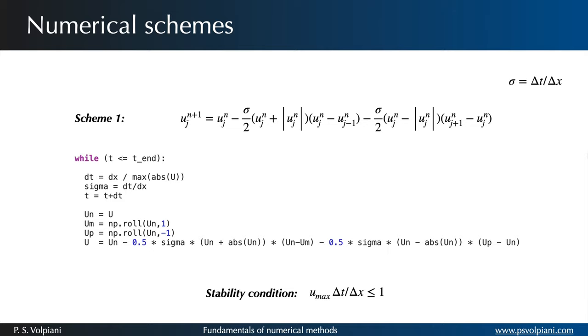The numerical simulations use periodic boundary conditions and the domain is discretized in 101 points giving a grid space delta x of 0.04. We analyze the results at two instances t equals 1 and t equals 2.